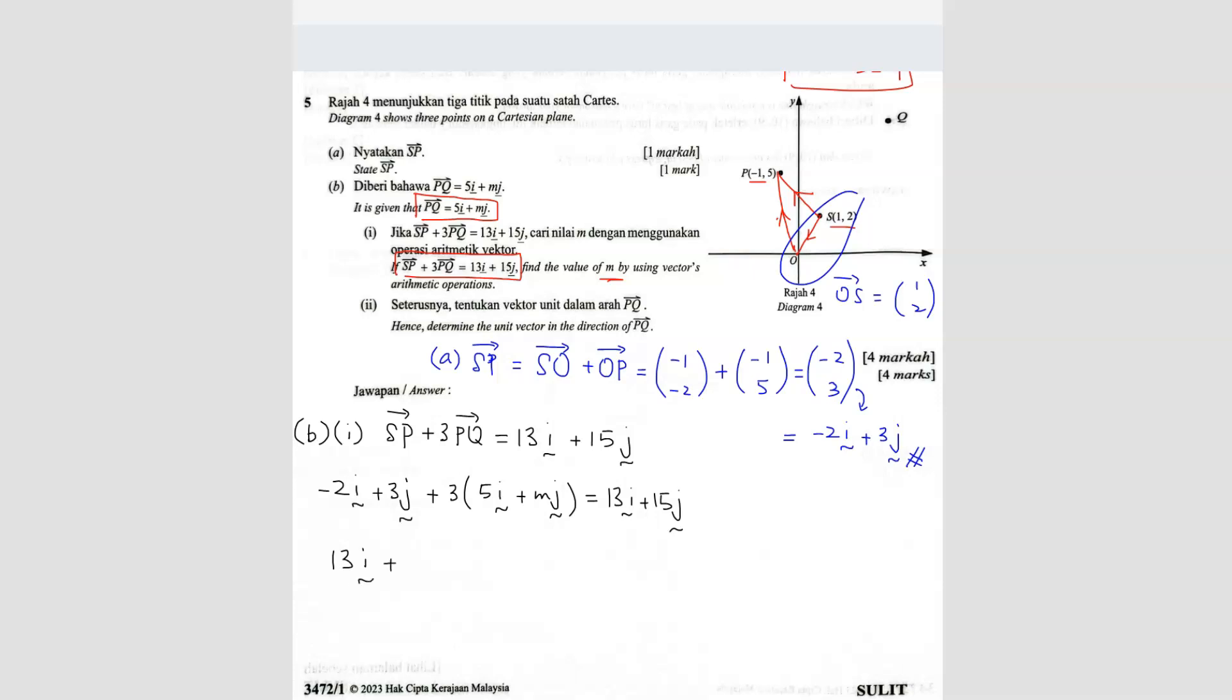So the J will be 3 and then 3 plus 3 times M. So I will have 3 plus 3M. So this will be for J. Equals 13I plus 15J.